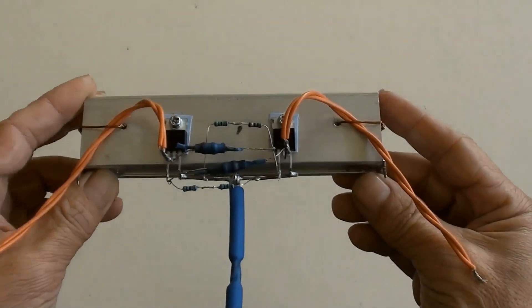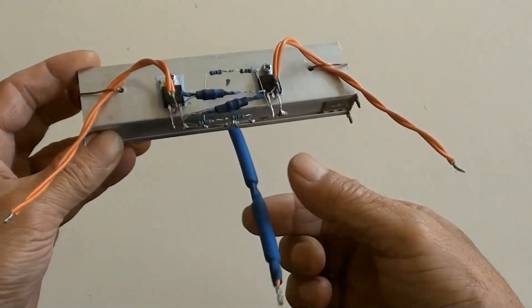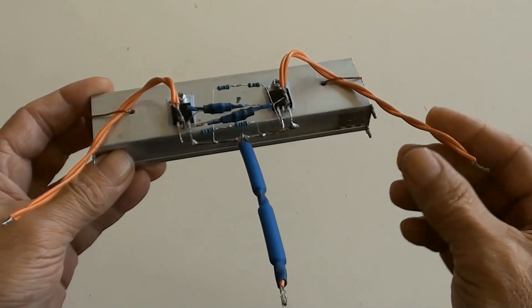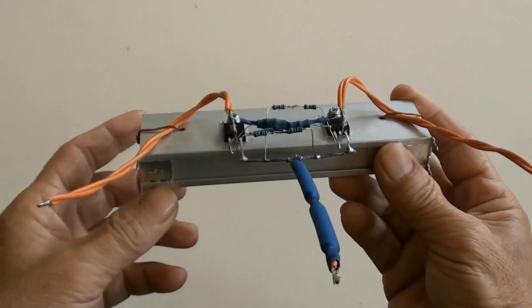The resistors have been soldered together with MOSFETs. This is the common wire which connected to MOSFETs source pins, and those are the wires which connected to MOSFETs drain pins.